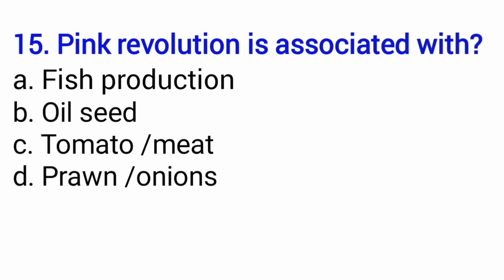Pink revolution — gulabi kranti — kisse sambandit hai? The options are fish production, oil seed, tomato or meat, or prawn or onion. Note that tomato and meat are associated with red revolution. So the answer for pink revolution is option number D — prawn or onion, that is, jhinga machli and piyaj. Both are correct. Whichever option is given — prawn alone, onion alone, or both — select that option.